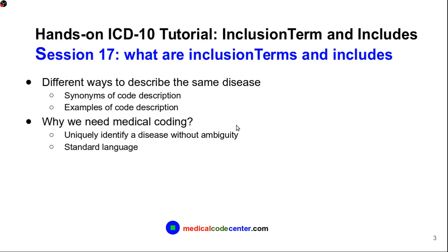Since different providers have different ways to describe the same disease condition, that's why we need medical coding. Medical coding basically gives you a standard way to describe a patient's disease, so an ICD-10-CM code will uniquely identify a disease without ambiguity. ICD-10-CM codes are the standard language for classification of diseases.